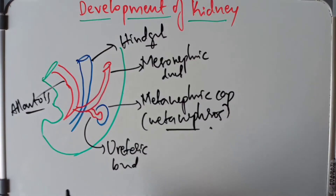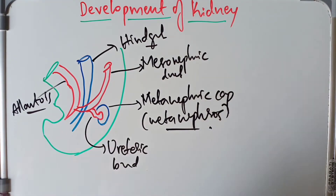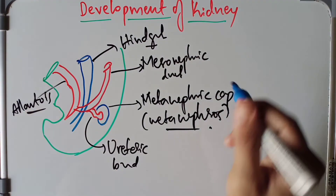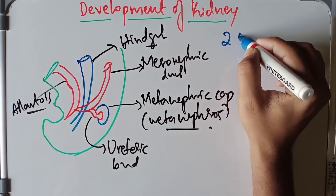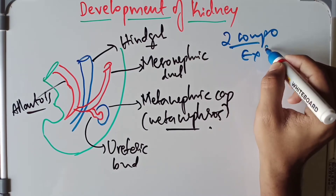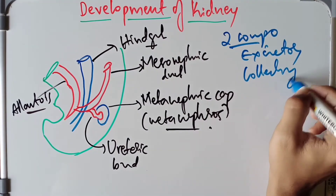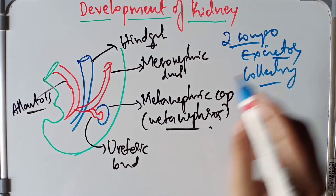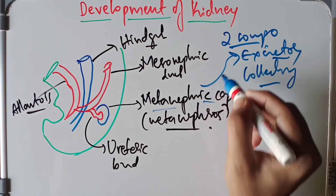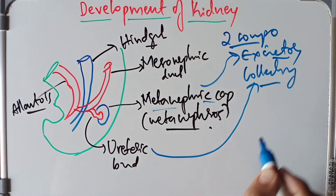The kidney consists of two components: the excretory component and the collecting component. The metanephric cap forms the excretory component, and the ureteric bud forms the collecting component.